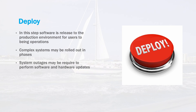Once testing is successfully completed, the software will then be deployed into the production environment. These deployments are generally scheduled on off hours or weekends as to not disturb users of the existing system. In addition, large systems may be rolled out in phases or one portion of the system at a time. User training may also be done at this time. Large systems will also require a communications plan to alert users when the new system will go into production and how they need to prepare for it.